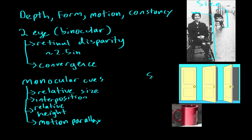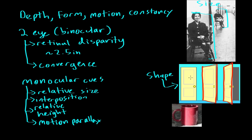There's also shape constancy. For example, a door is a rectangle, but as someone opens it, the shape we actually see changes — it becomes more of a trapezoid. The image the door casts on our retina is different as it opens. Yet we know the door isn't actually changing shape; it's still a rectangle being opened. Our perception of the door remains the same shape even though it casts a different retinal image. That's shape constancy.